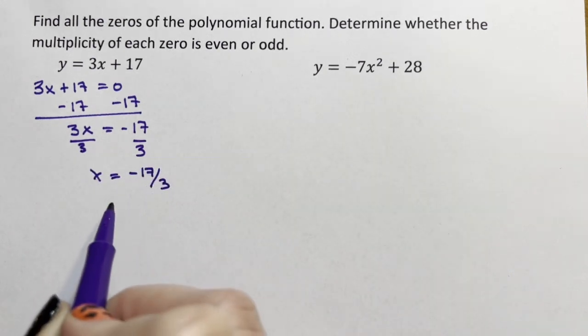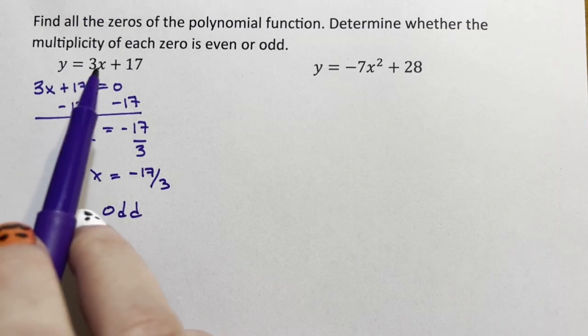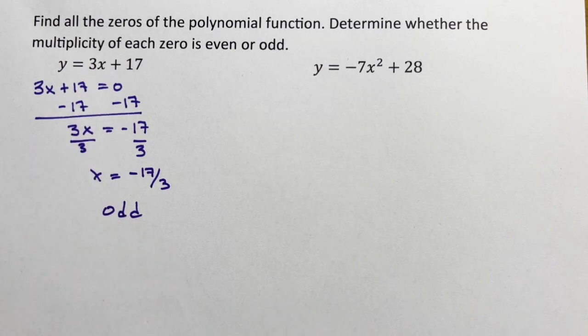There's only one, so this multiplicity is odd because one is an odd number. This is an odd multiplicity. We knew there was only one because the exponent is one.